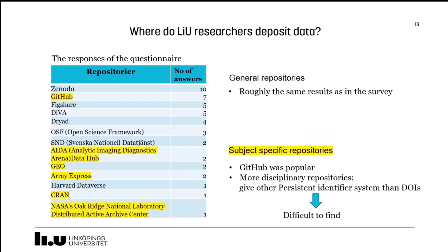Now let's look at the results from the questionnaire. 32 people responded. Zenodo was used the most, followed by GitHub, Figshare, and DIVA. Regarding general repositories, Zenodo, Figshare, and Dryad were popular, same as in the investigation. Regarding subject-specific repositories, GitHub was the most popular. We could find more subject-specific repositories in this survey than in the investigation with Datasette Commons. The reason is that subject repositories do not always provide DOIs to datasets — they often have their own persistent identifiers — and it makes it difficult to find the dataset. So it's important to consider whether the repository provides a DOI when you choose where to share your data.